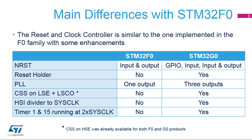The PLL has three post dividers providing three independent outputs: PLL P-Clock, PLL Q-Clock, and PLL R-Clock. The clock security system, or CSS, monitors the LSE and detects failures. If the low-speed external 32.768 kHz oscillator or LSE is used as a system clock and a failure of LSE clock is detected, the system clock switches automatically to the low-speed internal 32 kHz RC oscillator named LSI.